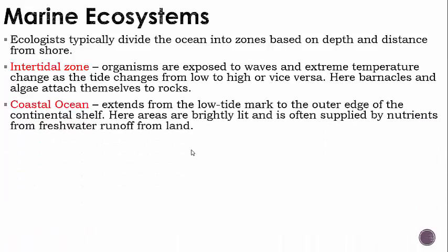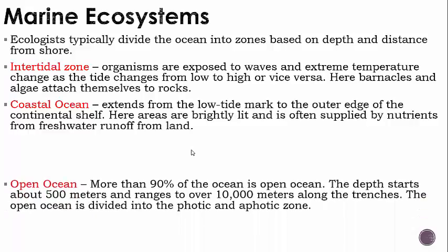Then we have the coastal ocean, which extends from the low tide mark to the outer edge of the continental shelf. Areas are brightly lit and often supplied by nutrients from freshwater runoff from land. All that sediment running off land goes into the ocean, and that's where it's often supplied by nutrients.